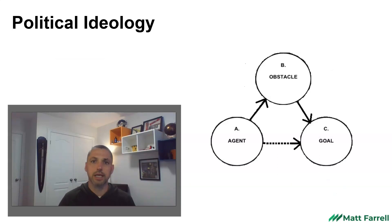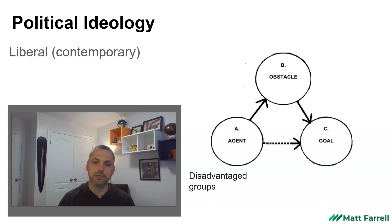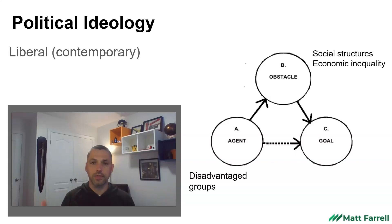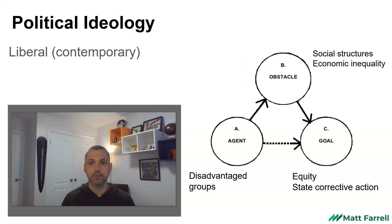Since the 1970s and the affirmative action movement, something we could call contemporary liberalism — at the time called reform liberalism — has emerged with a slightly different focus. For this worldview, disadvantaged groups in society are the agent, and they are being held back by social structures or economic inequality. Reform liberals don't just want equality of opportunity like classical liberals; rather, they want the state to come in and take corrective action, to ensure more equitable outcomes and reduce economic inequality and barriers for disadvantaged groups.